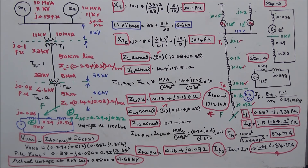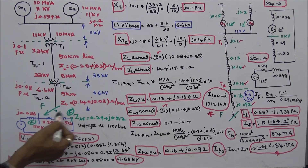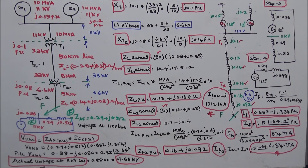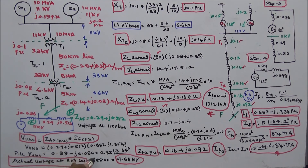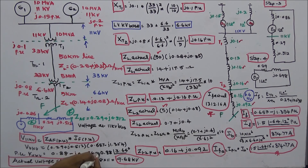The voltage at the 11 kV bus equals Z_AF multiplied by the fault current per unit: (0.29 + j0.512) × (0.657 − j1.354). This gives a per-unit voltage of 0.88 − j0.056, or in polar form 0.88∠−3.64°. The actual voltage at the 11 kV bus is 0.88 × 11 = 9.68 kV.